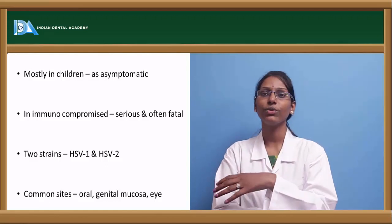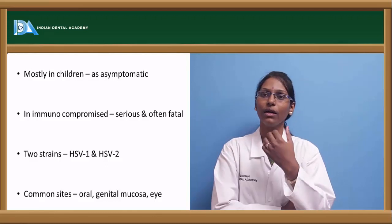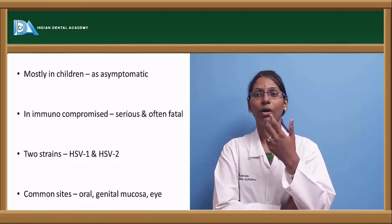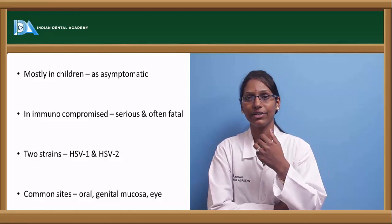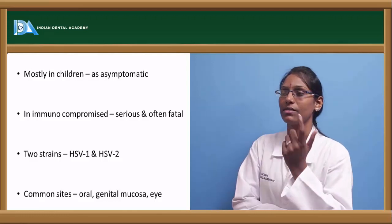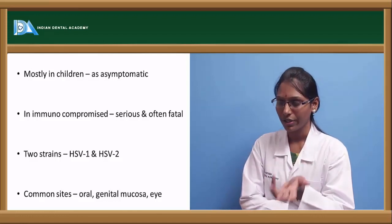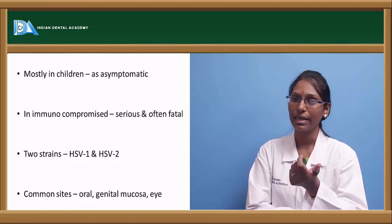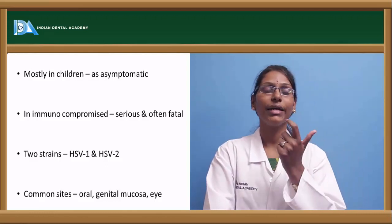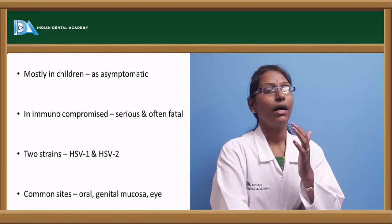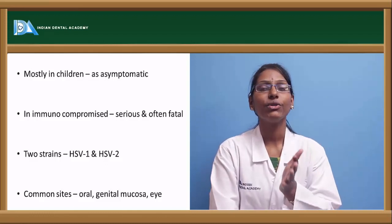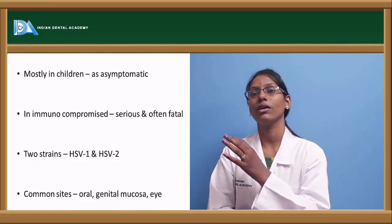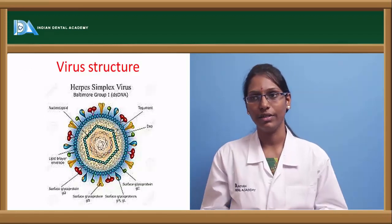However, HSV2 is nowadays also found in the upper body region, especially in oral and head and neck regions. The most common sites of infection are the oral cavity, genitalia, and eye. HSV-induced keratitis of the eye is one of the most common causes of blindness in the world.